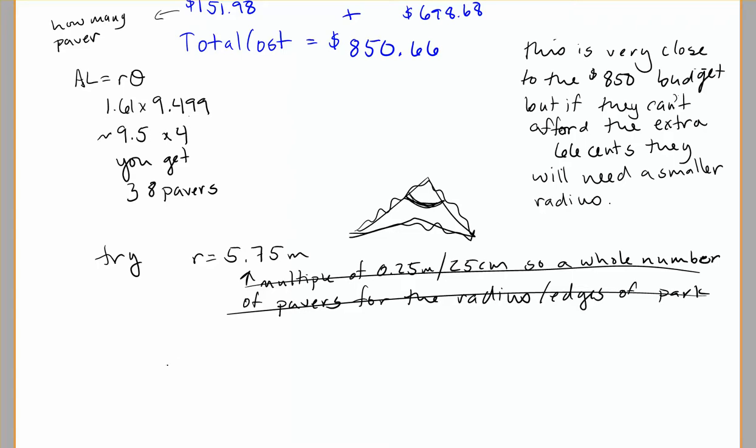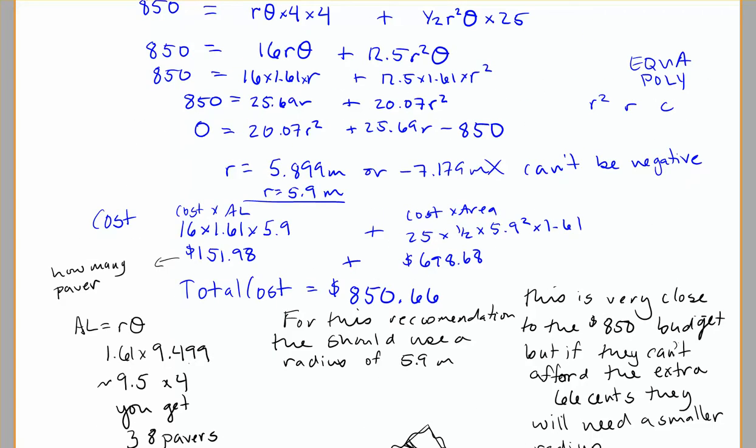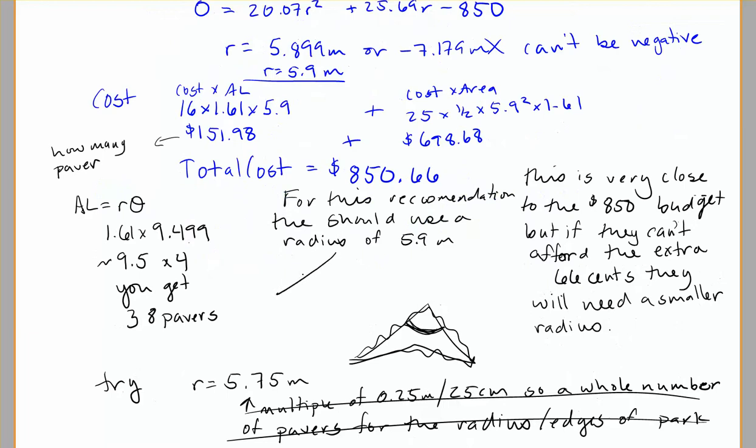So the last thing I would want to do here is make sure that I clarify that for this recommendation, they should use a radius of 5.9 meters because that's what we're calculating with and give them an actual image of what's supposed to be curved there, an image of what you mean by that garden so they have that plan for it.